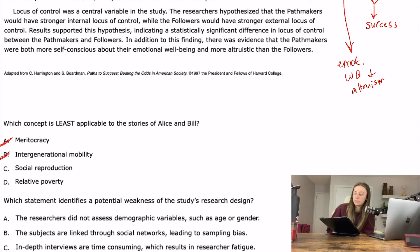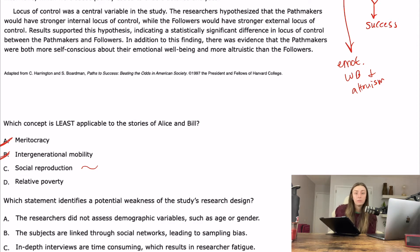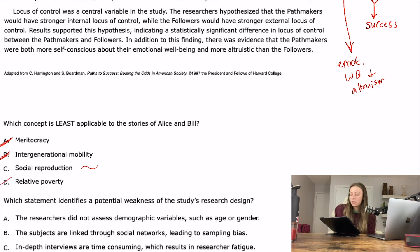Answer C says social reproduction — there's not really anything to do with social reproduction in the story of Alice and Bill, or really in this entire passage, so I think that one's probably not very applicable. Answer D says relative poverty — definitely both of them were probably considered relatively poor, particularly Alice. So the answer here is C.